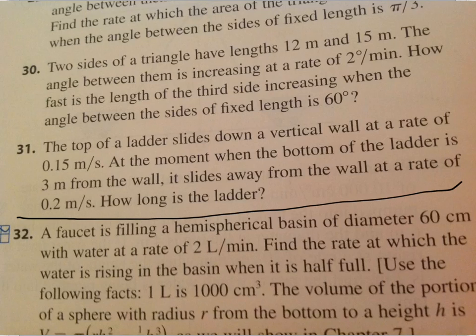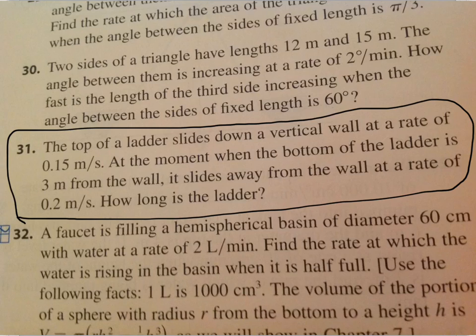And so here, a ladder is sliding down a vertical wall again, and it's sliding down at a rate of 0.15 meters per second. At the moment when the bottom of the ladder is 3 meters from the wall, it slides away from the wall at a rate of 0.2 meters per second. And I want to know how long is the actual ladder.